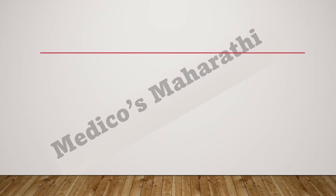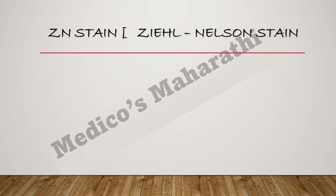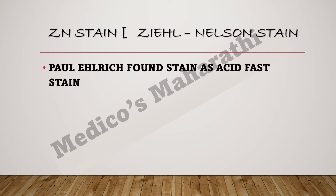Let's see the Ziehl-Neelsen stain, also called the Zaden stain. The first thing about this stain is that it was identified or found by Paul Ehrlich. In the past, it was called acid fast stain. It was later modified by two persons — Ziehl and Nelson — so today we call it the Ziehl-Neelsen stain.